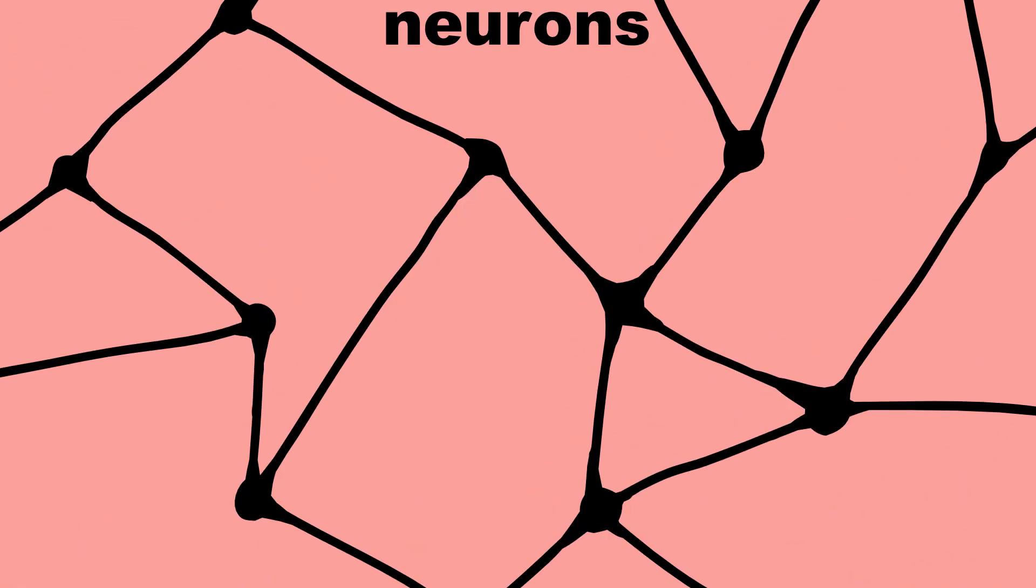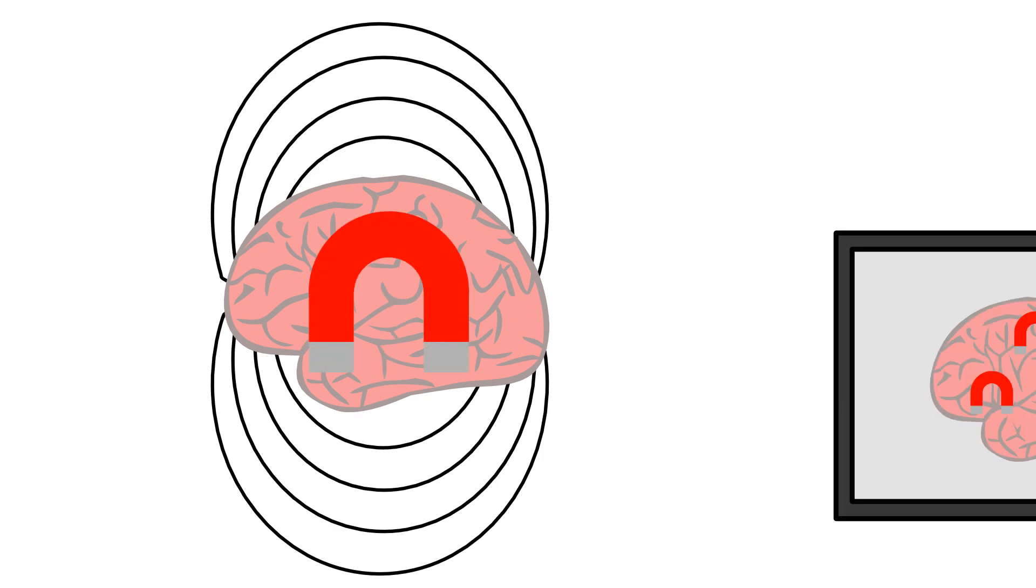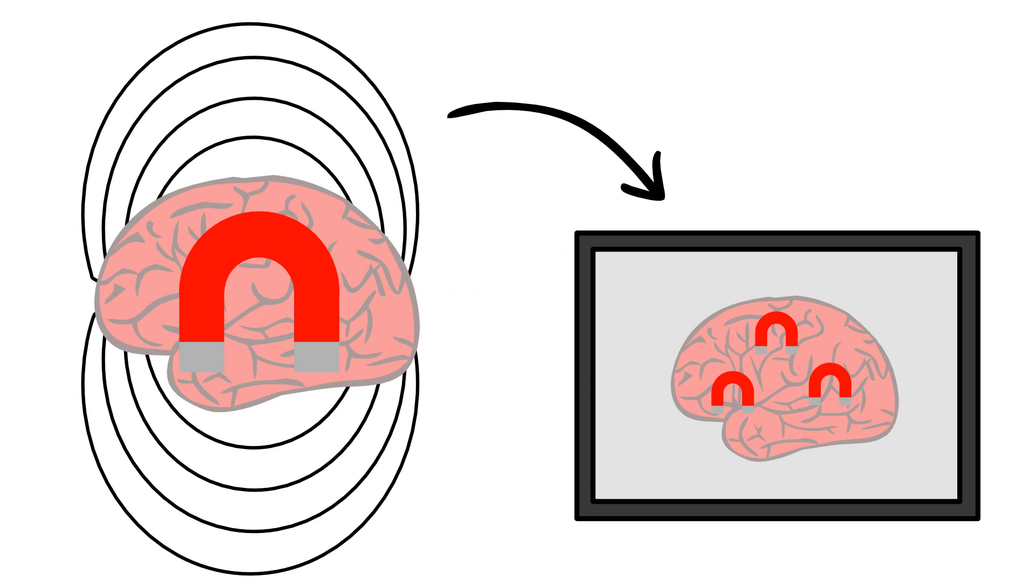The brain is made up of billions of cells called neurons. When the brain does stuff, these neurons are sending electrical signals to each other, which, like all electrical signals, generate magnetic fields. Magnetoencephalography measures and locates these magnetic fields, which indicate the electrical activity of neurons, which is the activity of the brain.